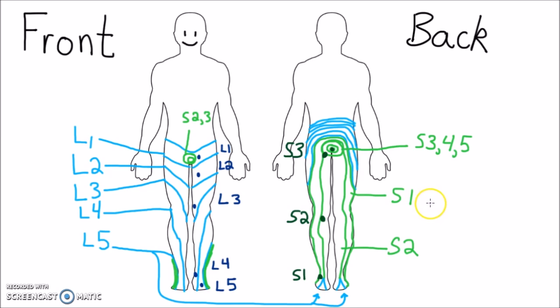Additionally, it is very important to determine whether voluntary anal contraction is intact, as well as deep anal pressure sensation, when assessing for spinal cord injuries. This can make the difference between a complete or incomplete impairment.